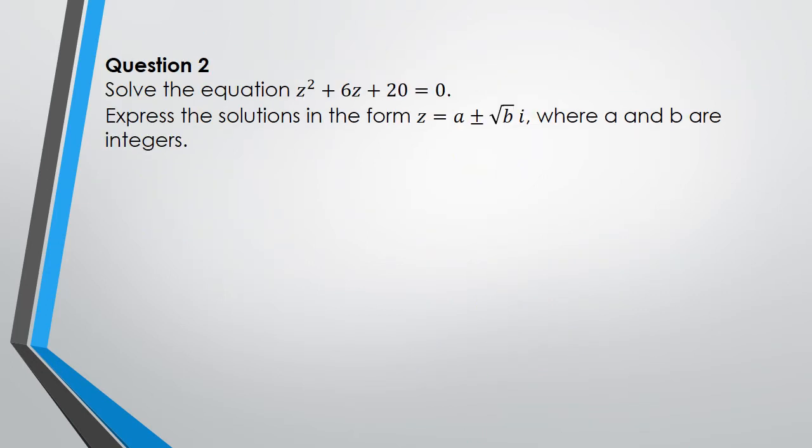Question two: solve z² + 6z + 20 = 0, expressing the solutions in the form z = a ± √(bi). With this one we're going to use the quadratic formula.